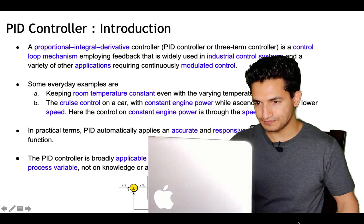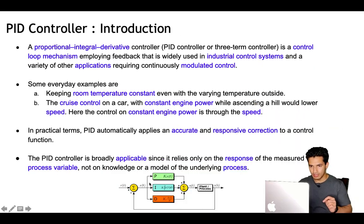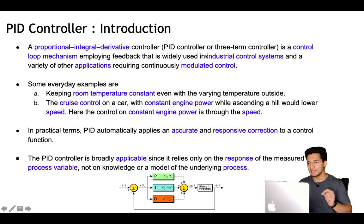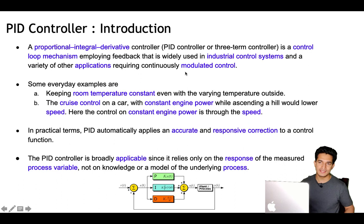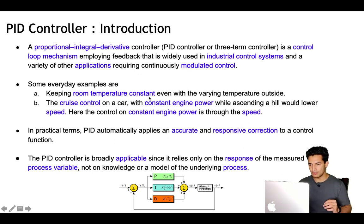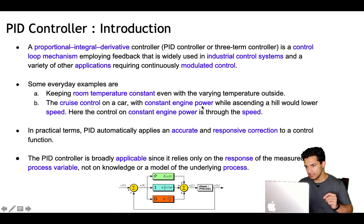PID controller — a Proportional Integral Derivative controller — is a control loop mechanism employing feedback that is widely used in industrial control systems and a variety of other applications wherever a continuously modulated control is needed. Some everyday examples would be keeping the room temperature constant even with varying temperature outside, or the cruise control on a car maintaining constant engine power.